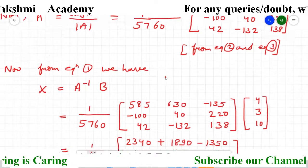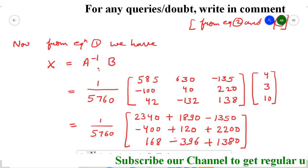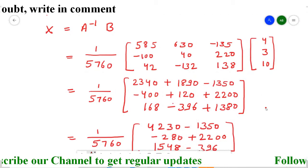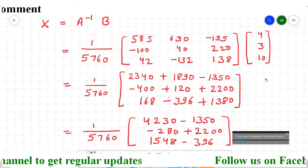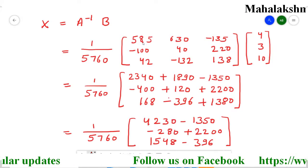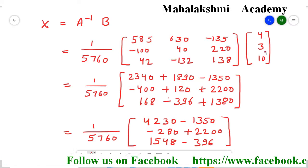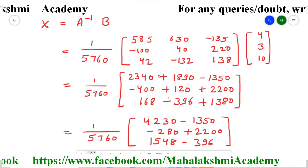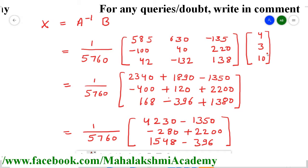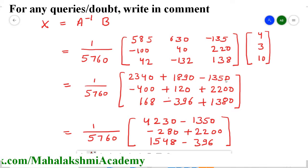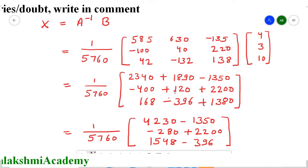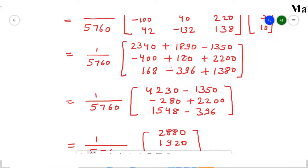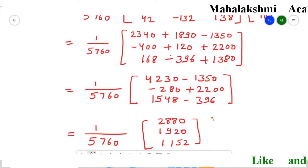From equation 1, x equals A inverse times B. We have just calculated A inverse, and B is the column matrix of values 4, 3, and 10 from the earlier steps. Now we multiply the two matrices — one square matrix and one column matrix. The first row multiplied by the column gives: 585 × 4, 630 × 3, and minus 135 × 10. Similarly, the second row and third row are each multiplied by the column, giving a resulting column matrix.